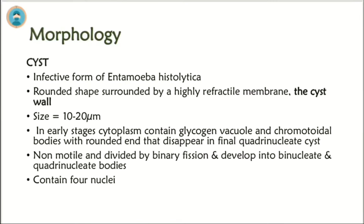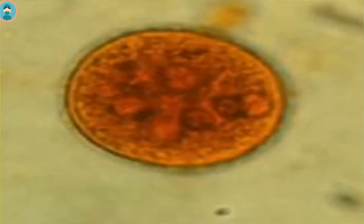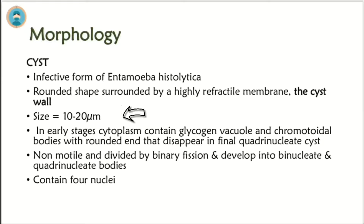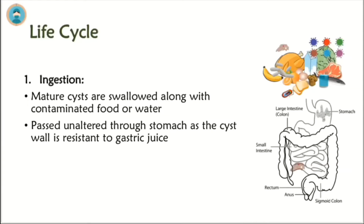The cyst is the infective form of Entamoeba histolytica. It is rounded in shape, surrounded by a highly refractile membrane called the cyst wall. Its size varies from 10 to 20 micrometers, and it is quadrinucleate, meaning it contains 4 nuclei. The life cycle involves various steps.